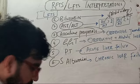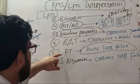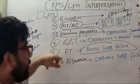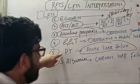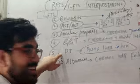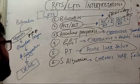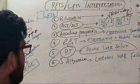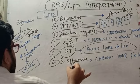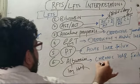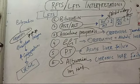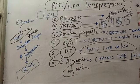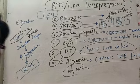PT is the indicator of acute liver failure. The PT reflects the extrinsic pathway, and the clotting factors responsible — factors 2, 7, 10, and 9 — are produced by the liver. Serum albumin has a very long half-life, making it an indicator of chronic liver failure. This concludes the discussion on LFTs — thanks for watching.